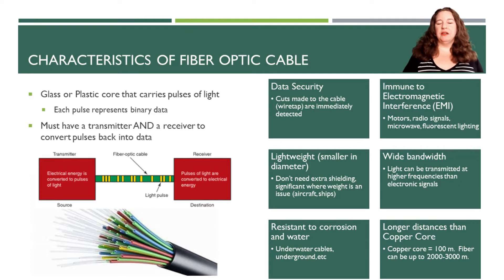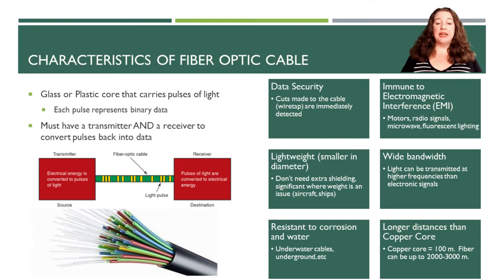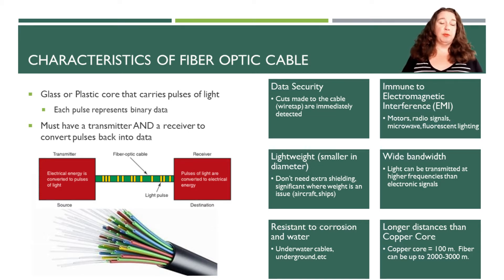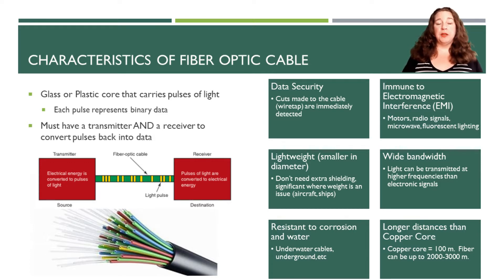With fiber optic cable, there are a lot of characteristics we need to be aware of. Fiber optic cable is generally either a glass or a plastic core that carries a pulse of light, as opposed to a copper core that carries pulses of electricity. Each pulse of light represents your binary data — on or off. To run fiber optic cable, you have to have both a transmitter and a receiver. Your transmitter converts electrical data into light pulses, runs it through the fiber optic cable, and then the receiver on the other end converts those light pulses back into binary data so it can be used by the computer on the other end.